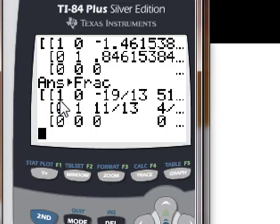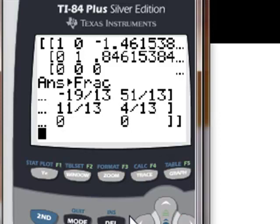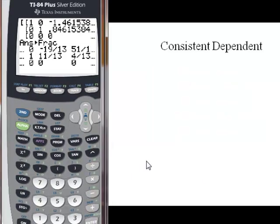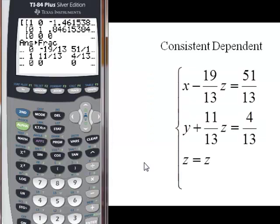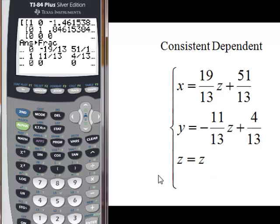If I look at what this is telling me, this is telling me x minus 19 thirteenths z equals 51 over 13, and so forth. So for my consistent dependent matrix it will look like this. I'm going to let z equal z, and then write my other two answers in terms of z. That's why we call them dependent, because they're dependent on what z is. We can put in values of z and get solutions.